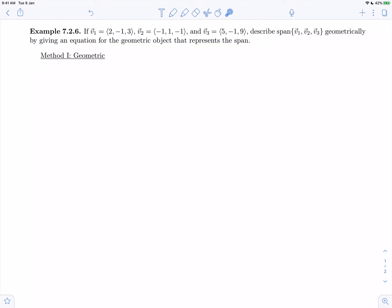We know spans are defined algebraically using linear combinations, but geometrically the span of three vectors in three-dimensional space can either be the point of the origin (the zero vector), a line through the origin, a plane through the origin, or all of R3.